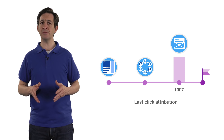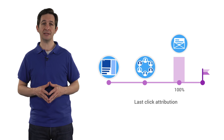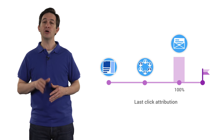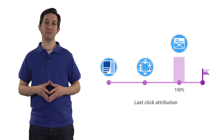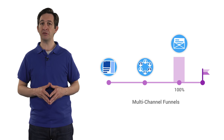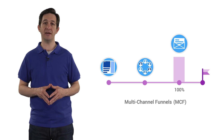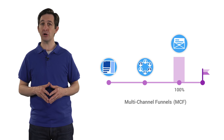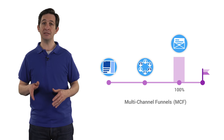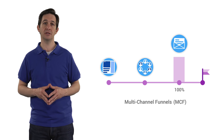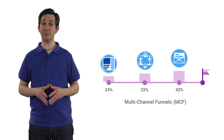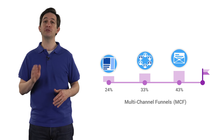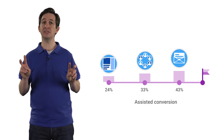But shouldn't some of the credit go to the other two marketing activities? To help you move beyond last-click attribution, Google Analytics has a series of reports called Multi-Channel Funnel Reports. These reports can tell you what role prior marketing activities played in the conversion process. A channel that contributed to a conversion prior to the final interaction would be credited with an assisted conversion.